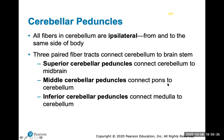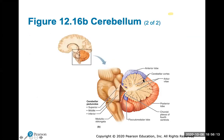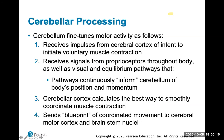Three paired fiber tracts connect the cerebellum to the brain stem. Importantly, all fibers in the cerebellum are ipsilateral — meaning they go to and from the same side of the body. This is unlike the cerebrum, which usually controls the opposite side of the body. The cerebellum's connections to and from the body are always same-side.